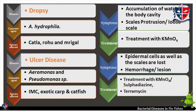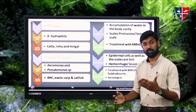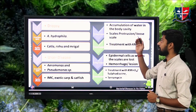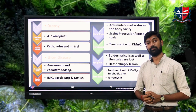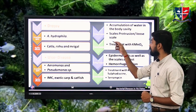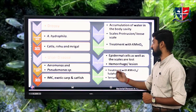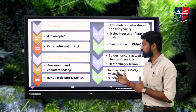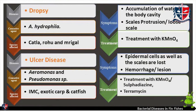Dropsy is caused by Aeromonas hydrophila, mainly affecting katla, rohu, IMC, and other freshwater fishes. Major symptoms include accumulation of body fluids in the body cavity, causing scale protrusion and loosening of scales. Treatment involves bath treatment with potassium permanganate, along with antibiotics and antiseptic agents.